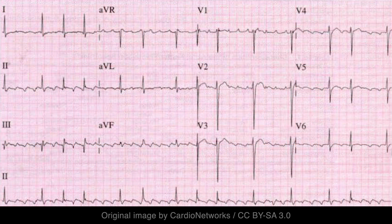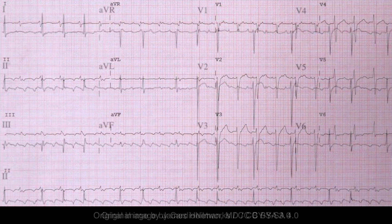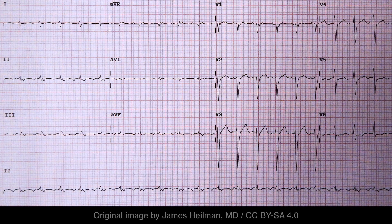Here's an example of atrial flutter with variable AV conduction ratios of 2:1 and 3:1. In this case the AV conduction ratio is 2:1, meaning every other flutter wave conducts to the ventricles.